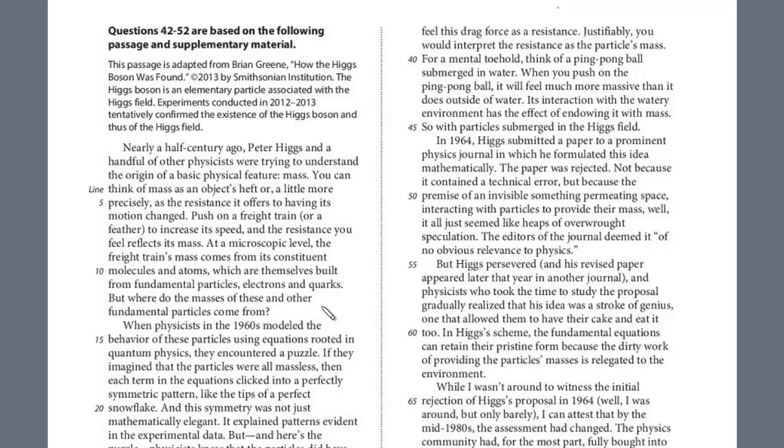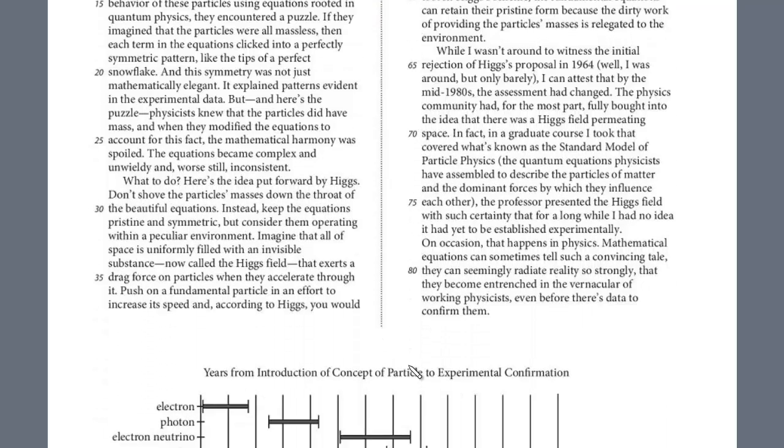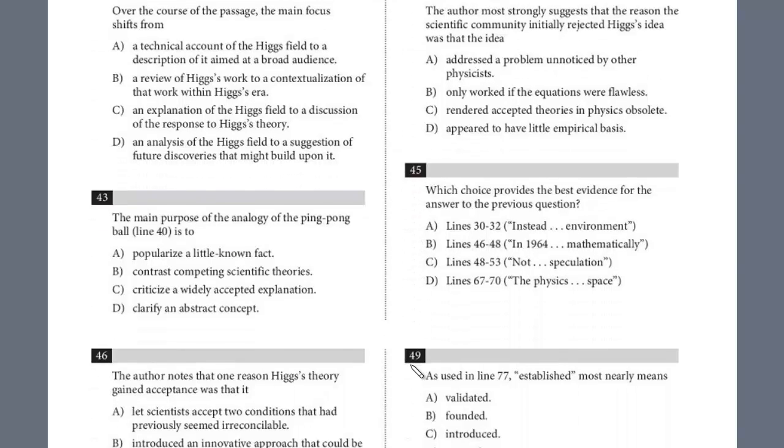In this lesson, we'll conclude a review of Reading Test 7, Section 1. We are on the fifth and final passage, how the Higgs boson was found. We did the first part of this passage in the last video, and so we are now on question number 48. This was the Higgs boson. In the beginning, it explained the theory, described the inconsistency, and then how the scientific community at first didn't accept this, and then gradually it was.